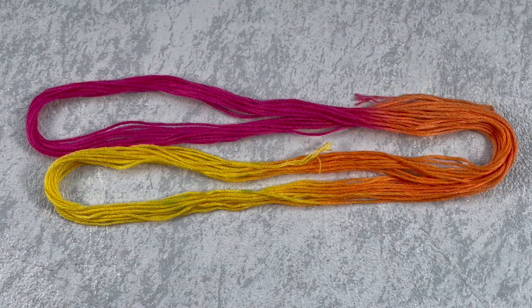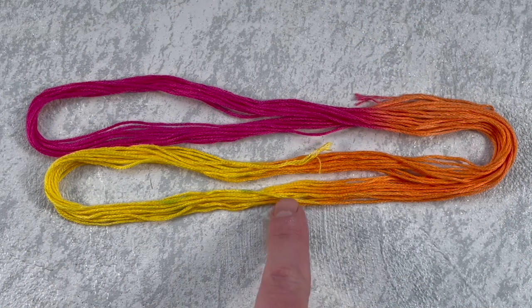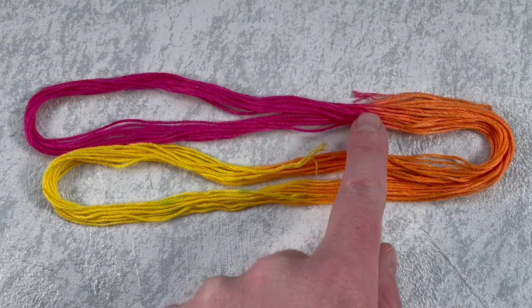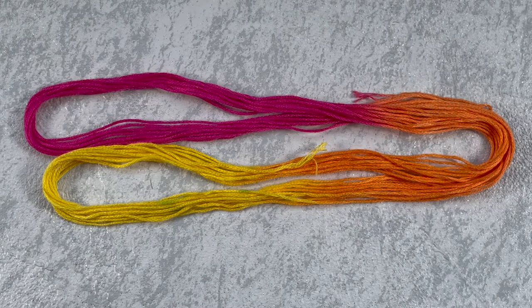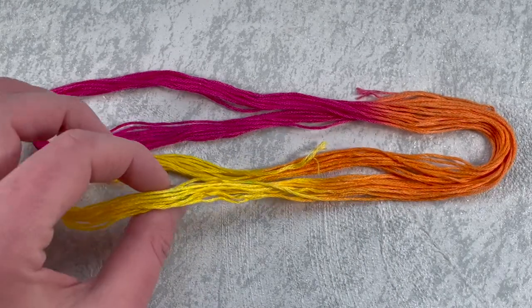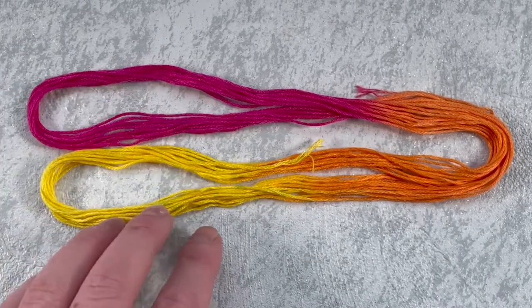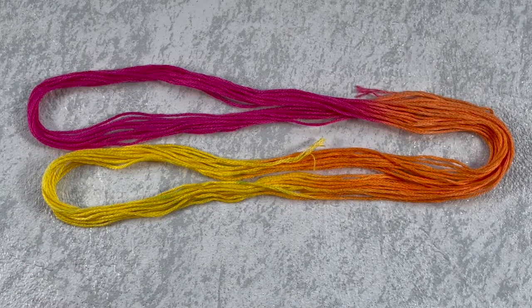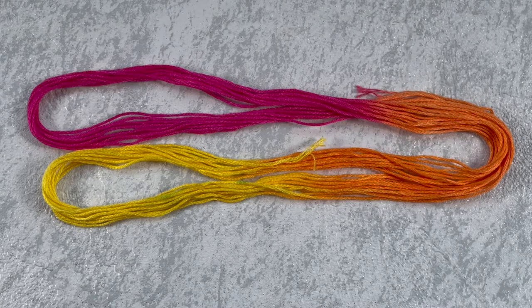And here is the finished dyed floss. We've got some lovely fades from the yellow to the orange and the orange to the pink. I'm really happy with how those turned out. They didn't muddy too much. There are a couple of little green splotches on that floss, the yellow bit, but I'm not too worried about that. I think it looks quite nice altogether.